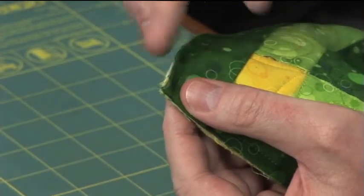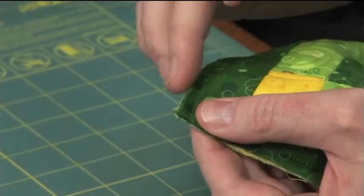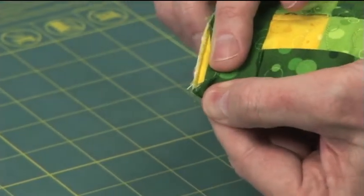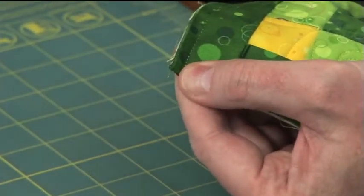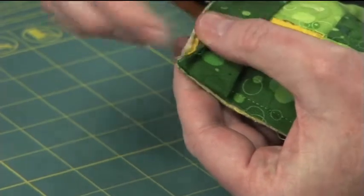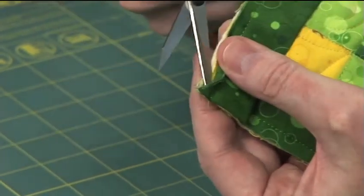To expose that, you see where you stitched there? Take the point of your scissors and go right in, in front of that. Place it right in front of that 45-degree angle.